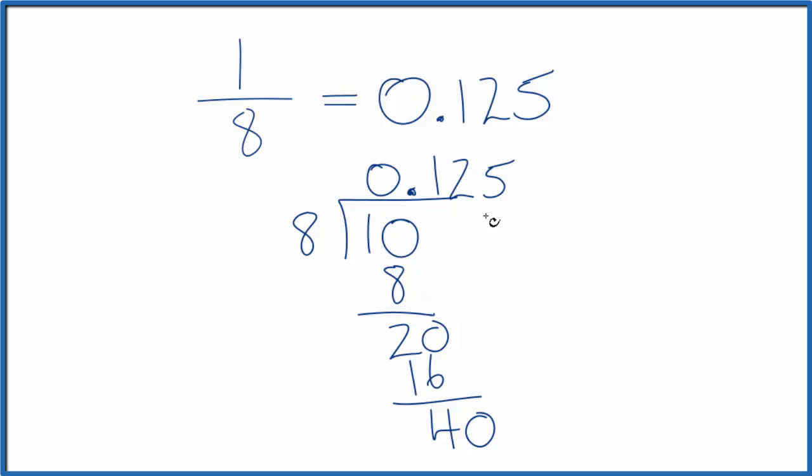So if we do the division longhand, we end up with 0.125, which is what we found with the calculator. So convert 1/8, the fraction 1/8, to decimal form, you get 0.125.